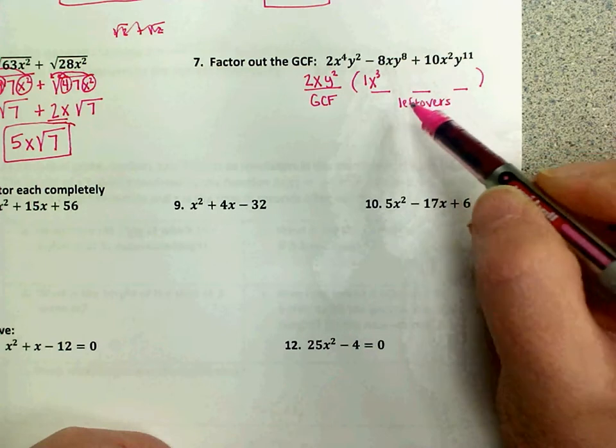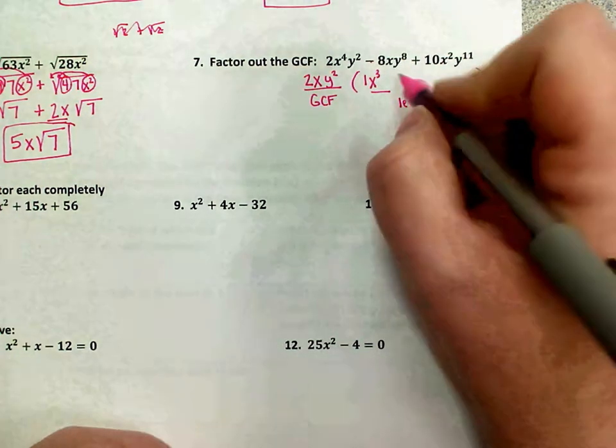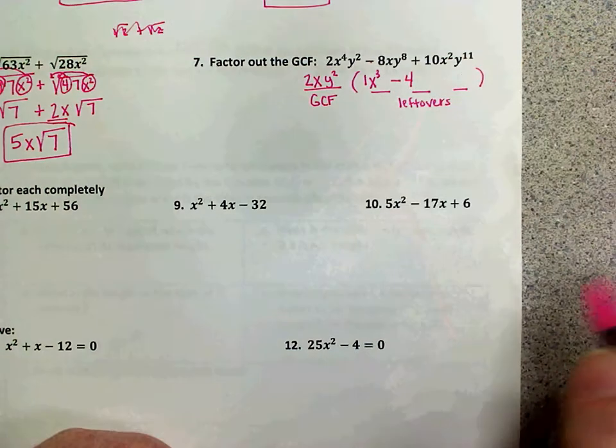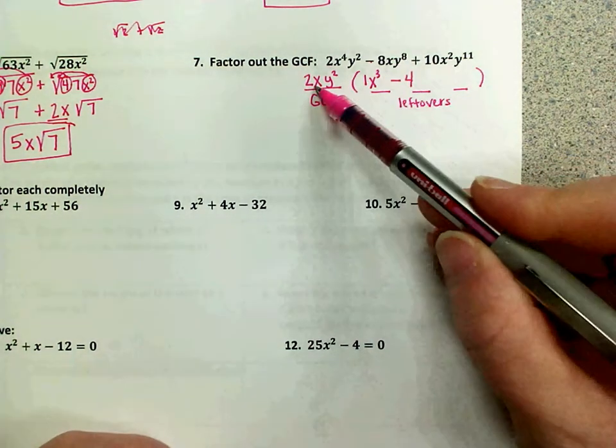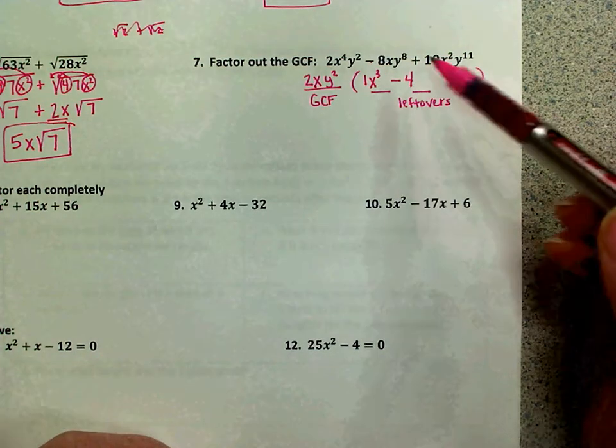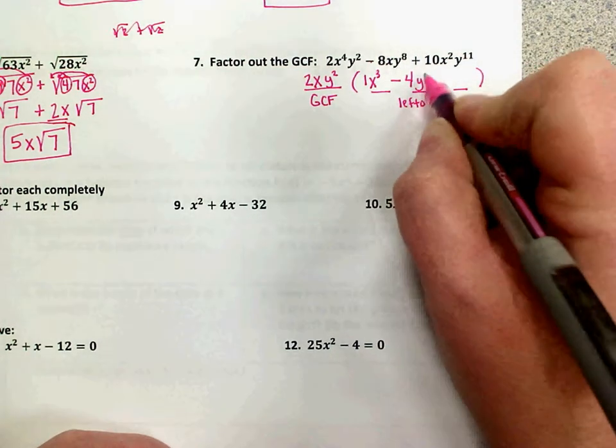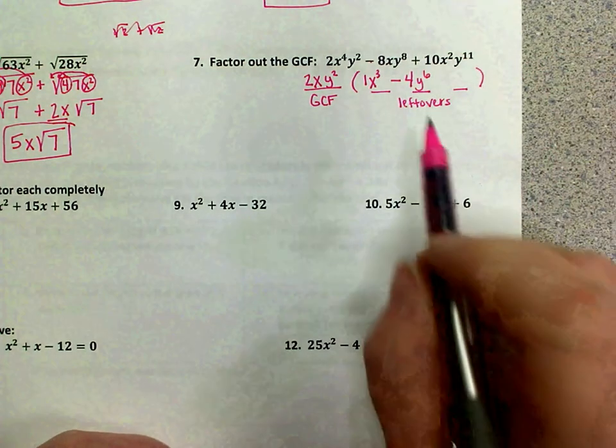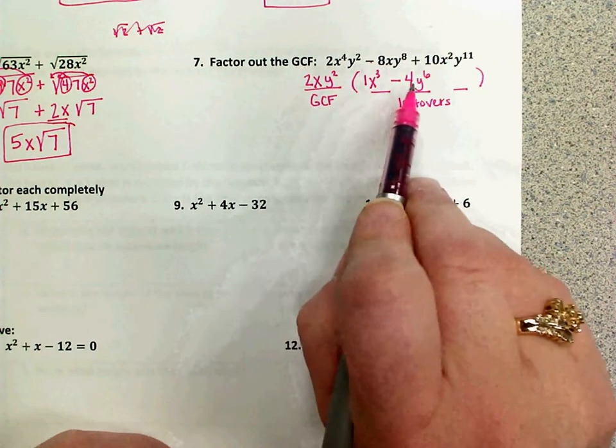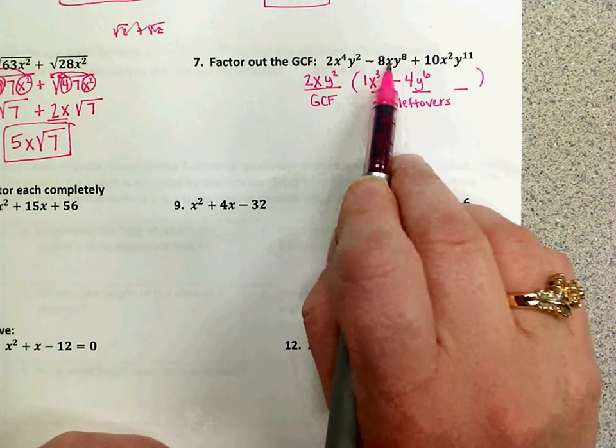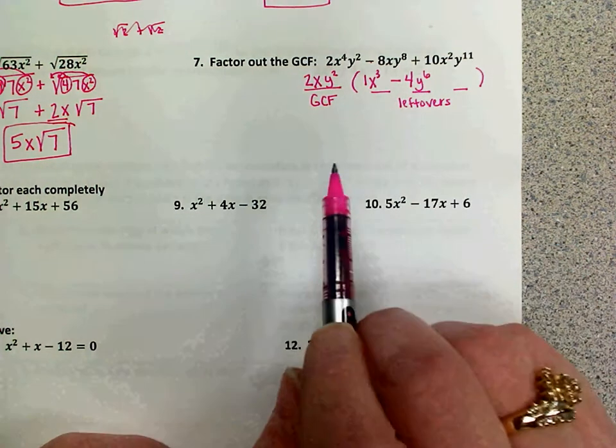Now we're going to do our second term. Two times what would give me a negative eight? Negative four. So that's the number part of the second term. I had an x. I took it out. So I'm not going to have an x left over. I had eight y's. I took two out, so I'm going to have a y to the sixth remaining. So again, two times negative four is negative eight. X without another x to add exponents stays in x. Y to the second times y to the sixth would become y to the eighth when you add those exponents.